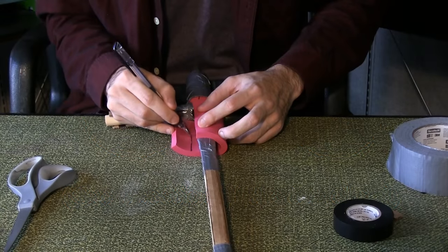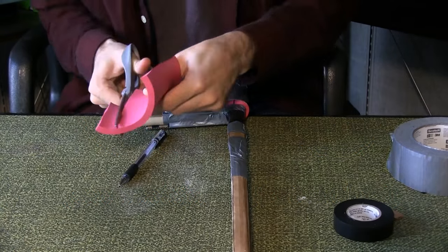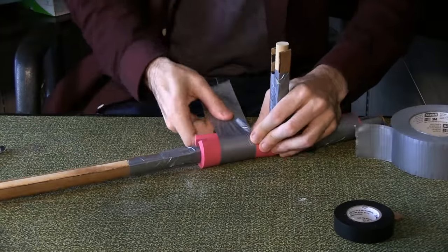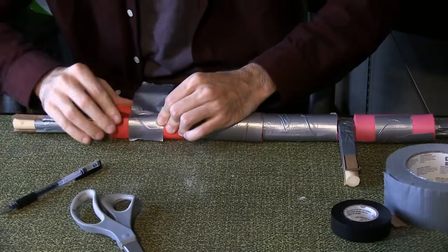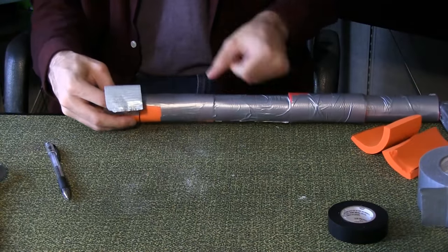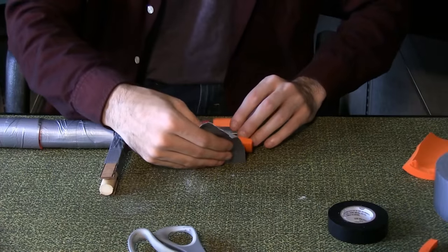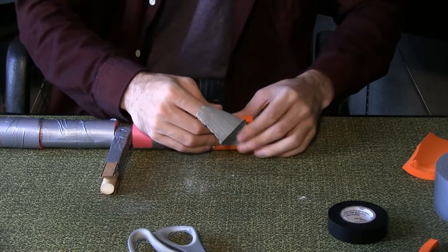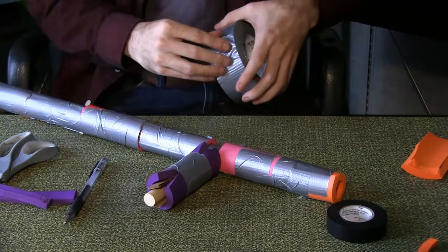Repeat this process for the rest of the nightstick. You may need to cut shorter pieces for the two ends. Leave the end of the handle without foam. We'll get to it later.